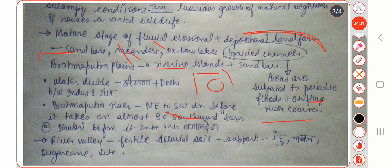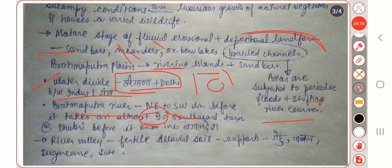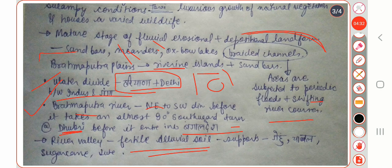There is a divide between the Indus and Ganga drainage. The Brahmaputra river flows from northeast to southwest direction before it takes an almost 90-degree southward turn at Dubri before entering into Bangladesh. River valleys are basically fertile and the soil supports crops like rice, wheat, and sugarcane.